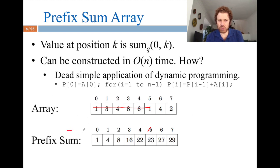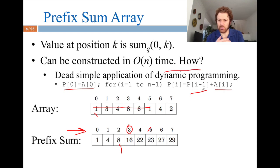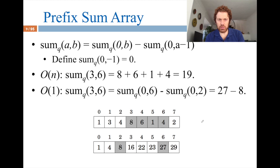How do we construct the prefix sum array? It's very simple. The first entry is just a[0]. Then as we go forward, each entry is the previous prefix sum plus the current array value — this is where dynamic programming kicks in. For example, p[3] = p[2] + a[3], so we just read the previously computed value. p[6] = p[5] + a[4], which gives 23 plus 4 equals 27.